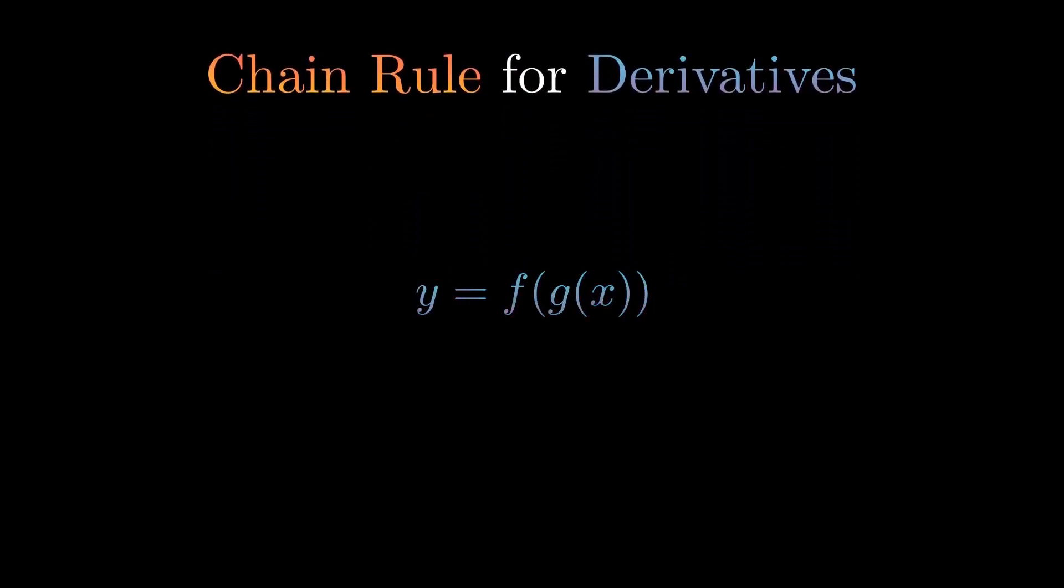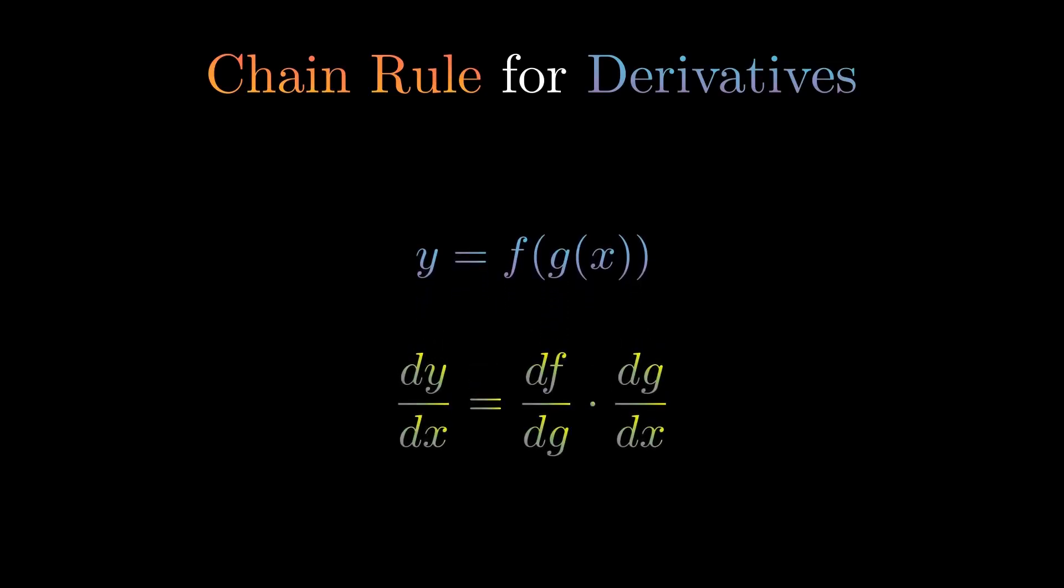Before we do the quotient rule, we need to do the chain rule. The chain rule relates to differentiating a composition of functions or a function inside of a function. If you have y equals f(g(x)), the derivative of y is equal to how much f changes when you change g and how much g changes when you change x. Basically, y is dependent on f, which is dependent on g, which is dependent on x.